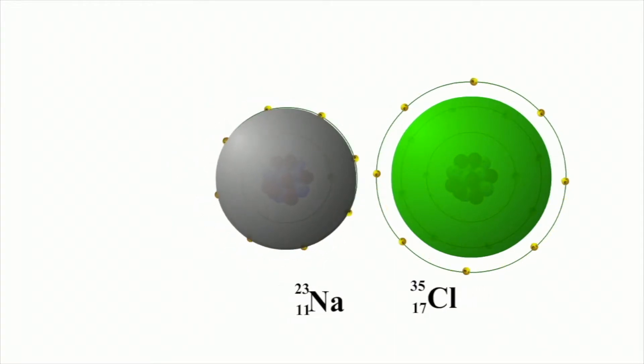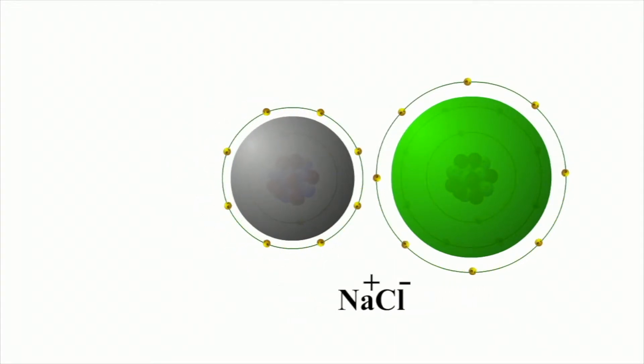When this happens, the atoms of sodium and chlorine ionize. They form ions. An ion is an atom or molecule with a net charge because it has lost or gained one or more electrons. The atom becomes charged because the number of electrons no longer equals the number of protons.